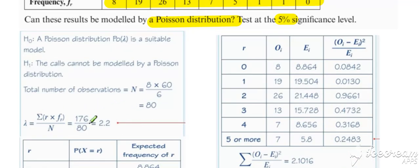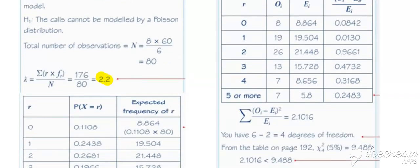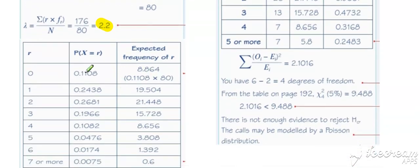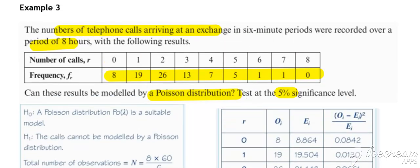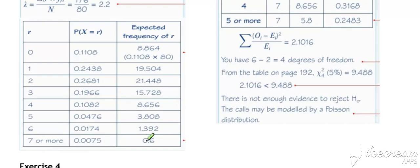The question doesn't give us the value of lambda. We've had to estimate it by working out the mean of this frequency table. We can now use that lambda value to work out our expected frequencies. So use your Poisson function on your calculator or by calculation, we can work out each of these. Note that once we get down to the higher values, to the top end, you can see that the highest observed was seven. So we don't need to go any higher than that. So when we work out for seven or more down here, we get this 0.6 by just taking the others all away from one.